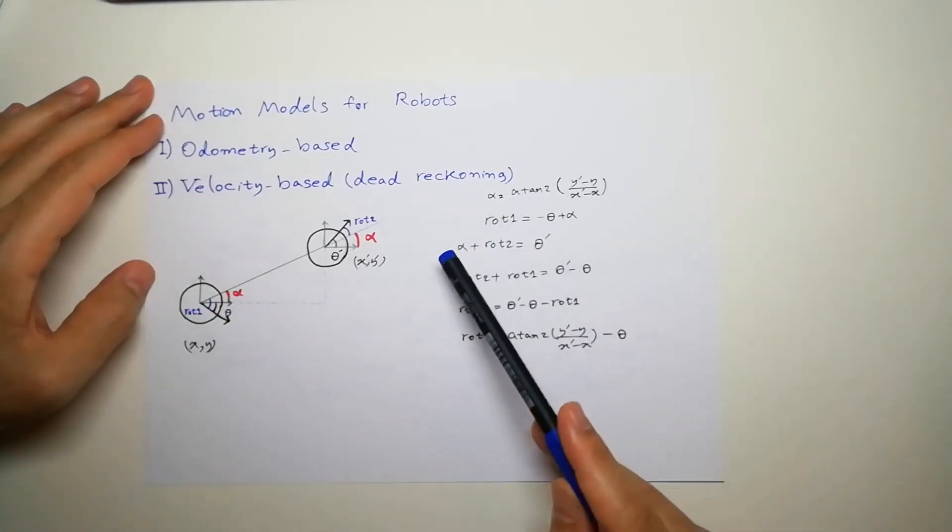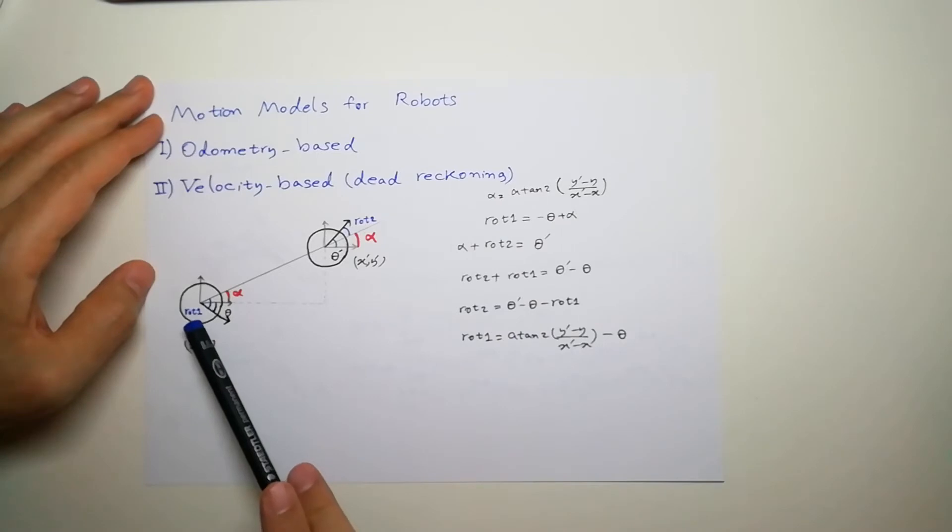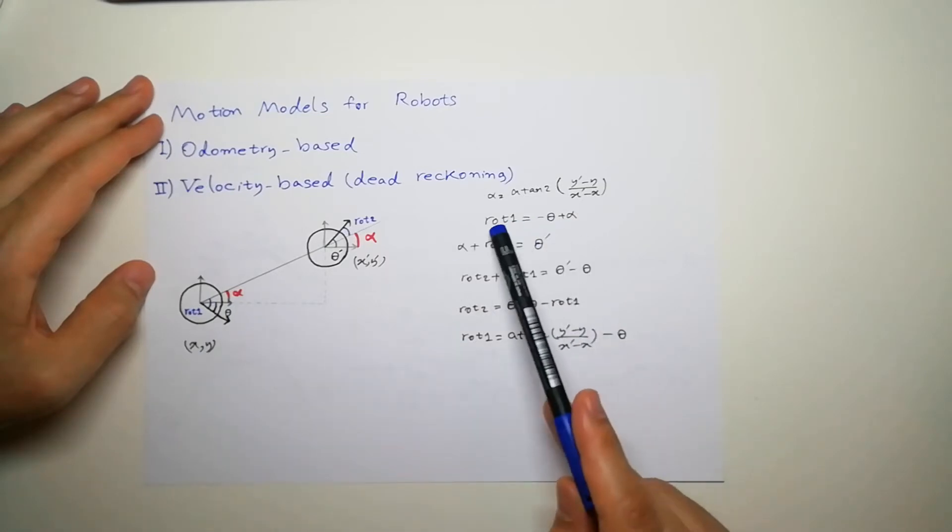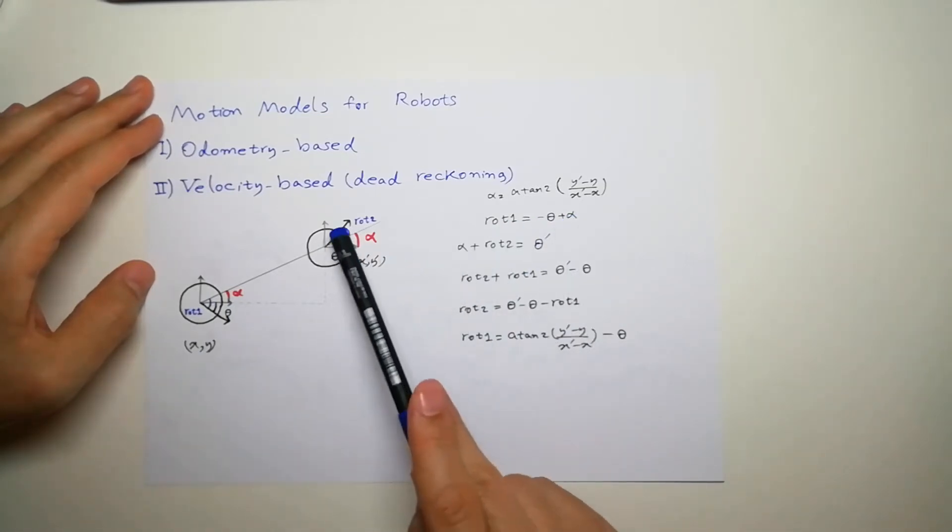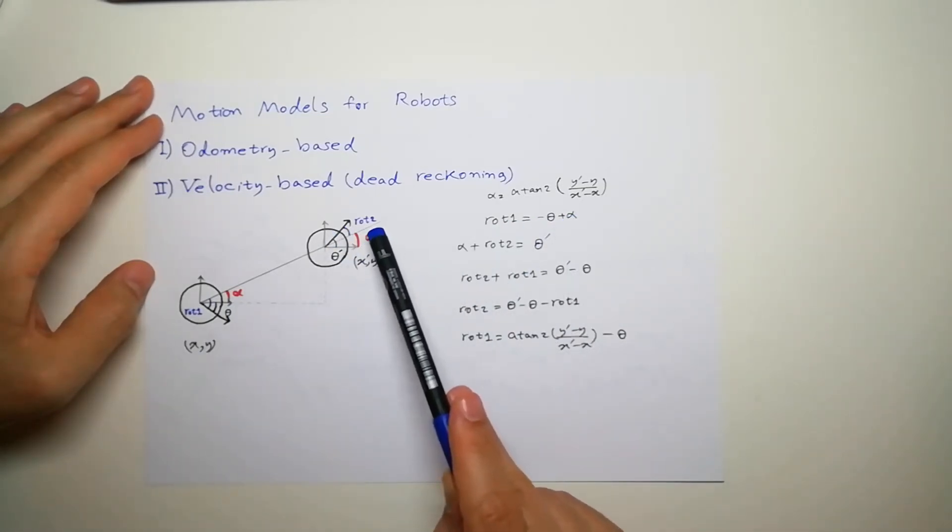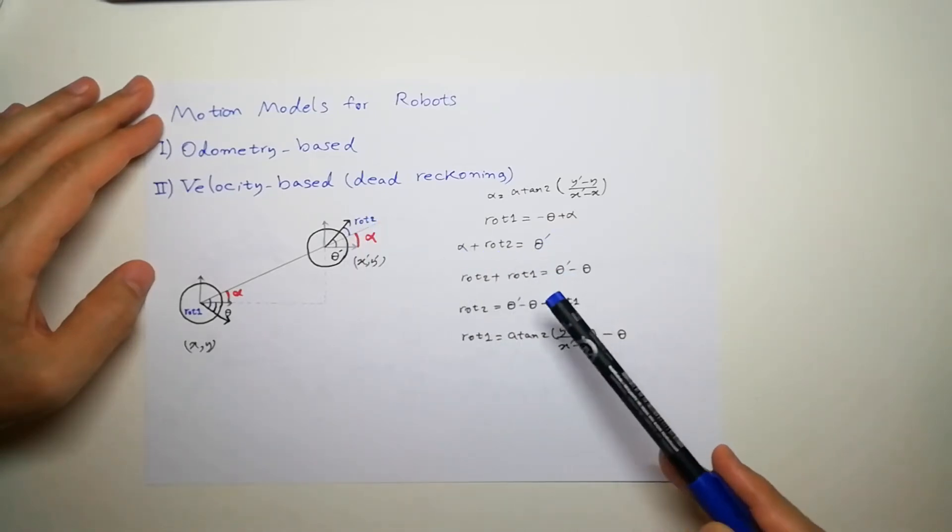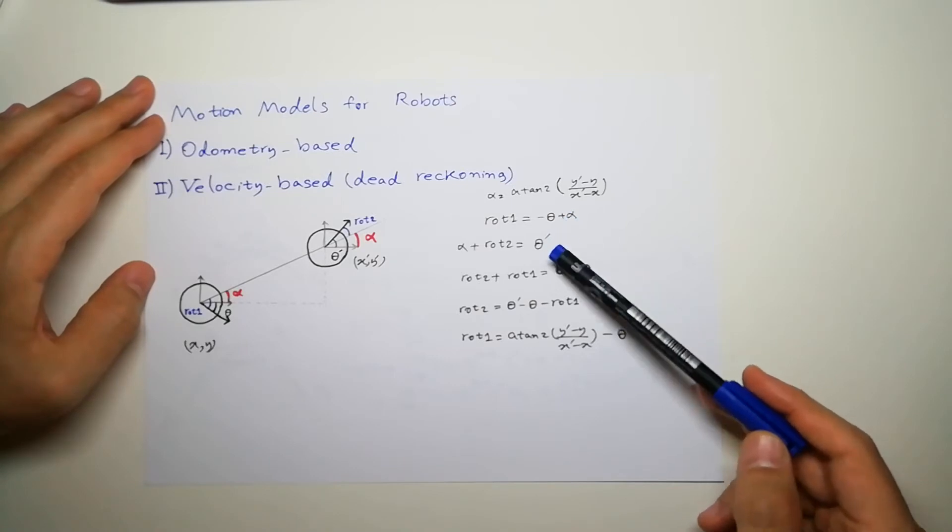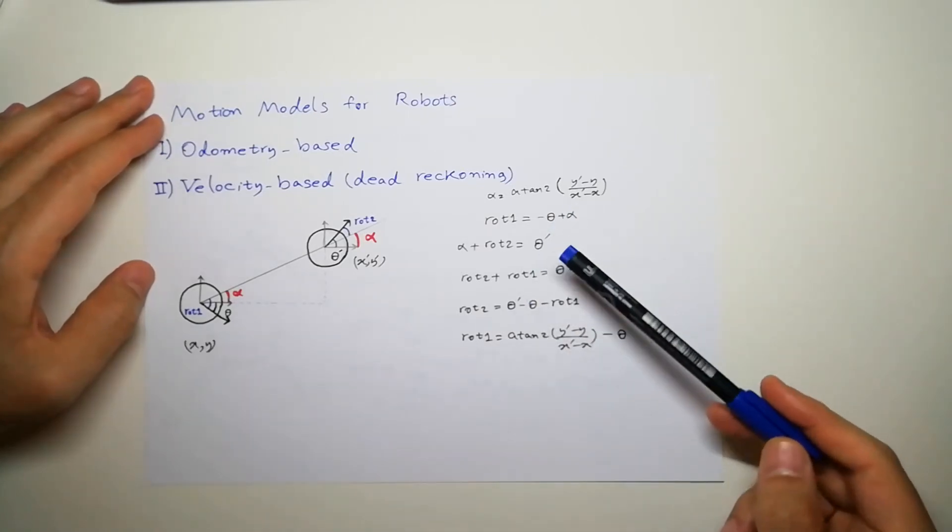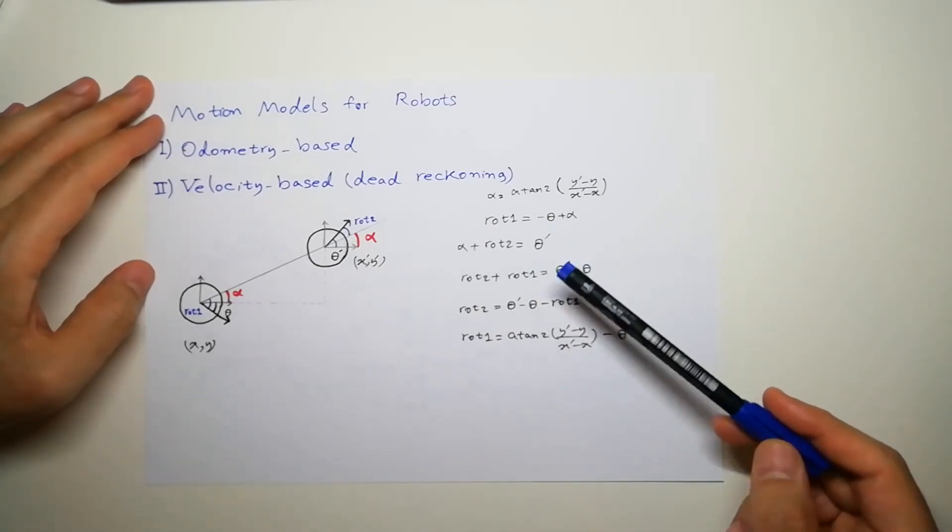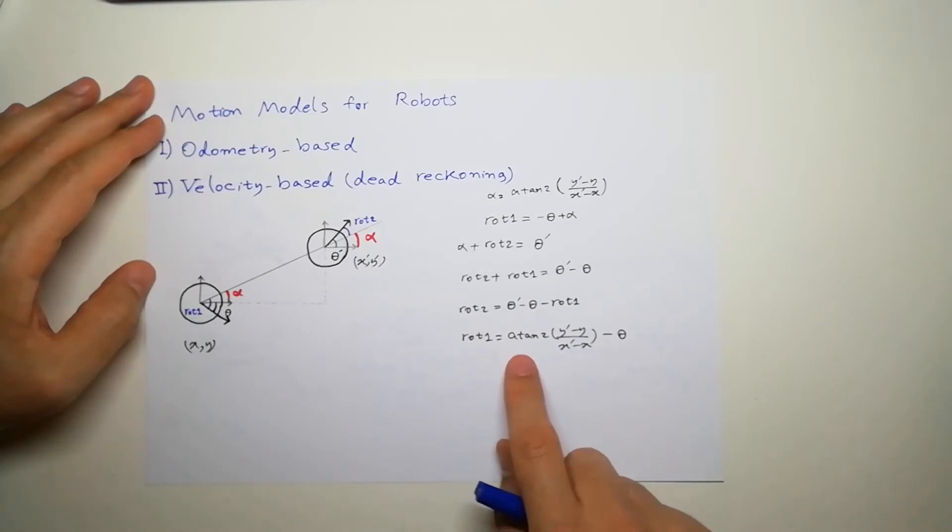So, we have alpha, and we know that rotation 1 is equal to theta plus alpha. And here, we can see alpha plus rotation 2 is theta prime, which is the new heading of a robot. So, if we add and subtract these from each other, we can get this equation here.